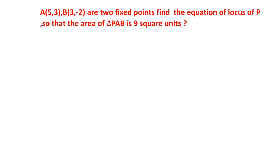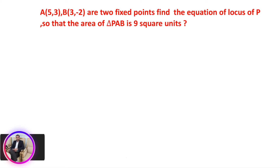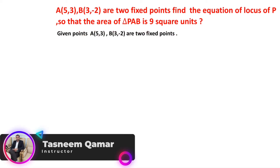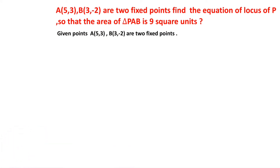A(5,3) and B(3,-2) are two fixed points. Find the equation of the locus of P such that the area of triangle PAB is 9 square units. Let P(x, y) be a point on the locus which satisfies the condition that the area of triangle PAB is 9 square units.